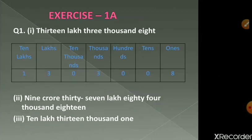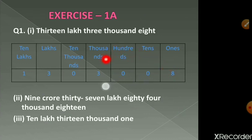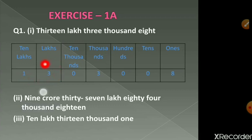Now let's start with Exercise 1a. The first question is we have to write the following in numerals. I have done the first one for you — that is 13 lakh 3008. For convenience I have written this in the place value chart: ones, tens, hundreds, thousands, ten thousands, lakhs, and ten lakhs. Since the question says thirteen lakhs, we will place it in the lakh period — that is 1 and 3 in the ten-lakhs and lakhs place.